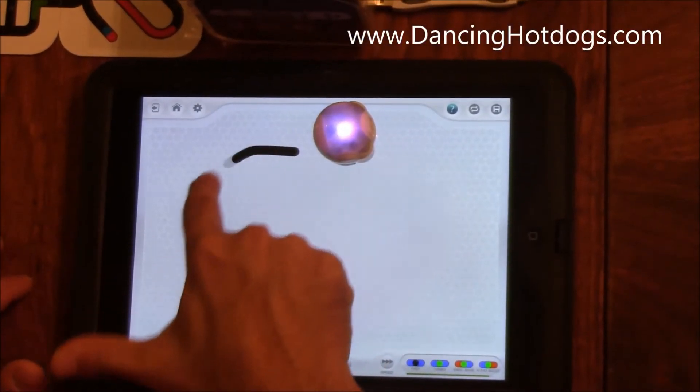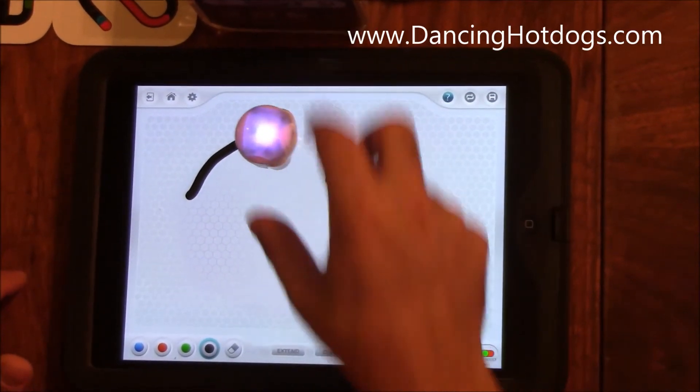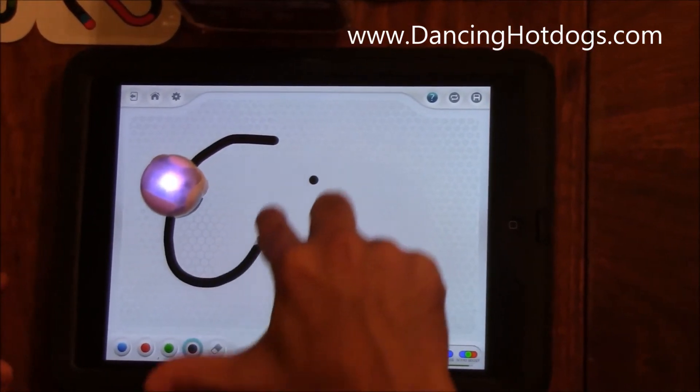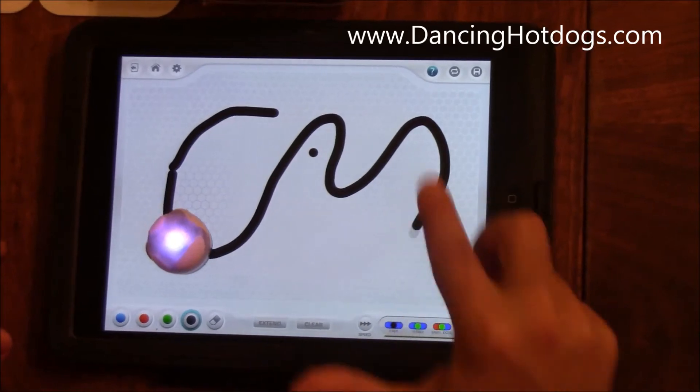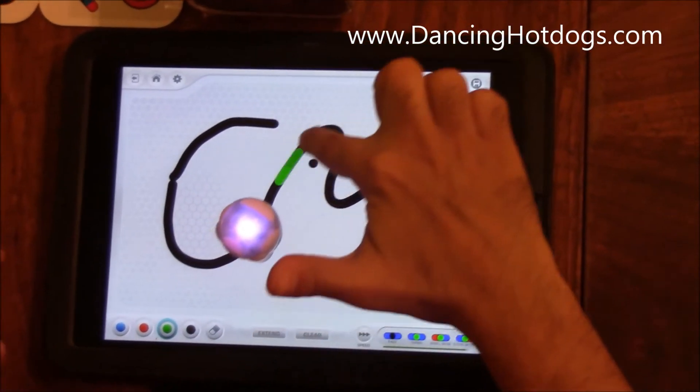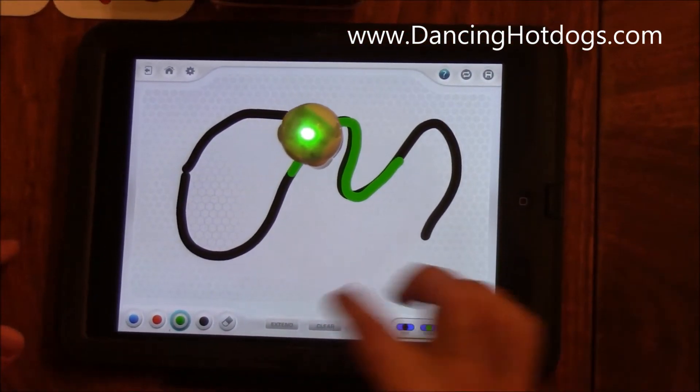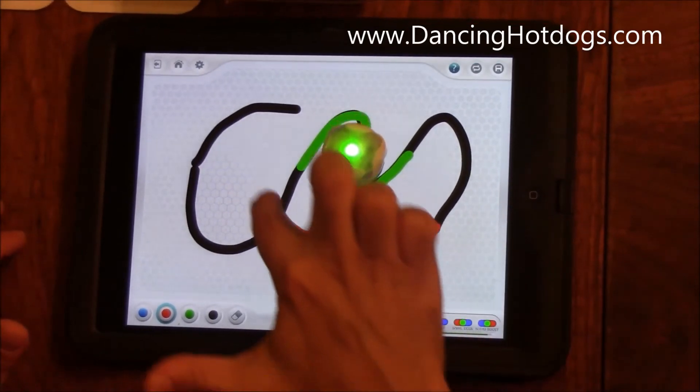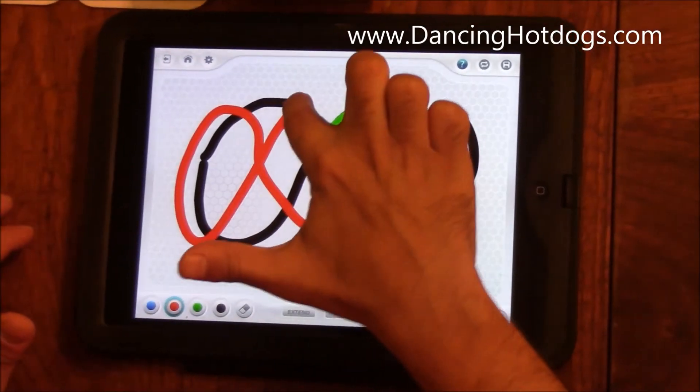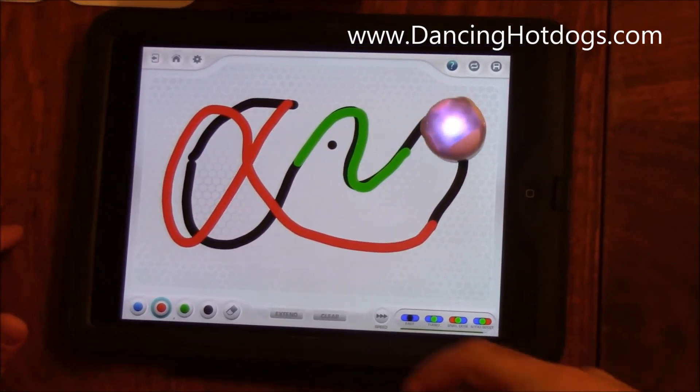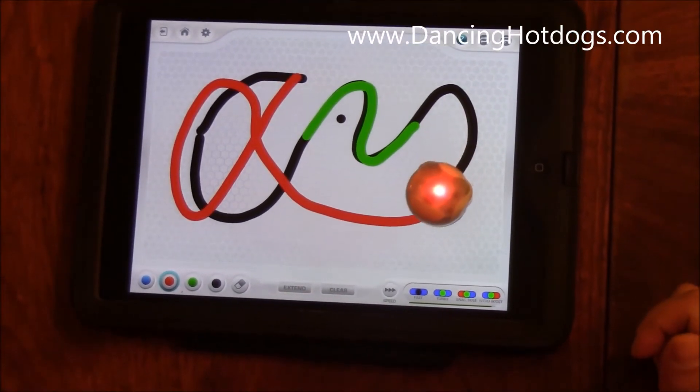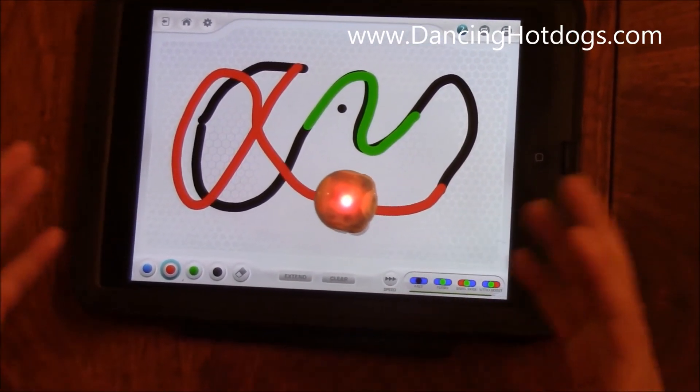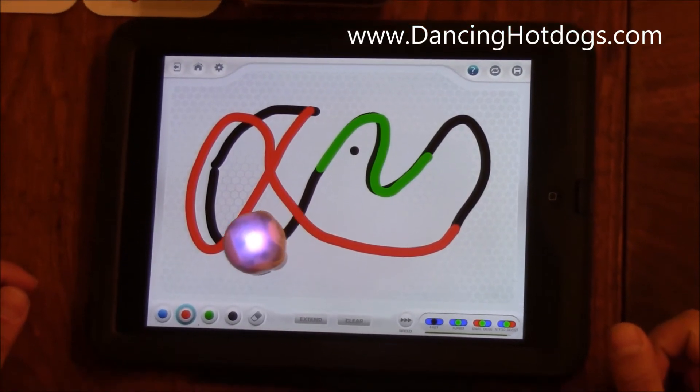So here is Ozobot in action. This is the free play mode where I can just create various designs and have it follow along anywhere I want. You can also create different codes to have it run through and do different tasks - turn around, do various things. I really like it because you can just create as much as you want and create an infinity loop.